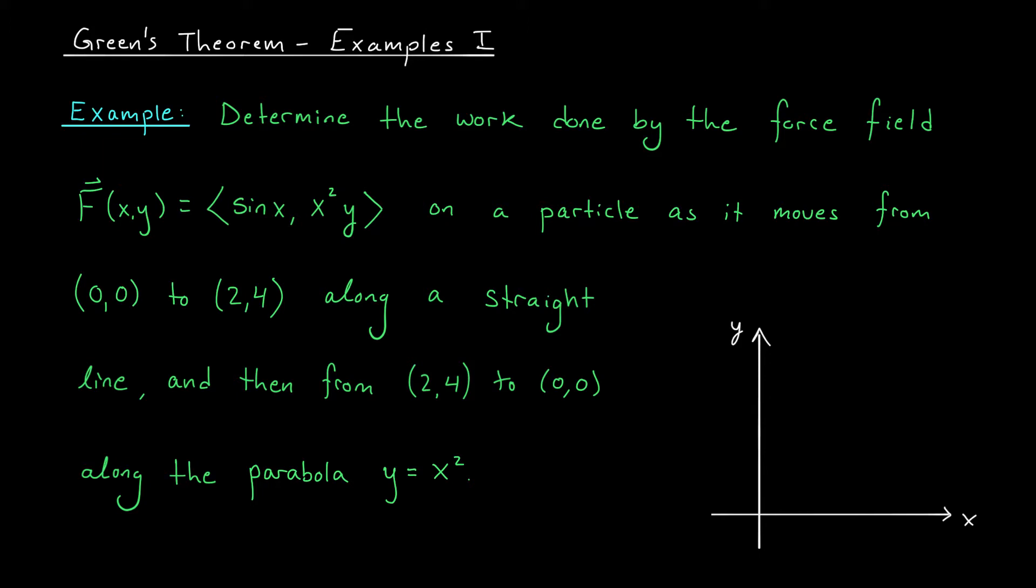There are lots of words in the statement of this problem, so it's helpful to draw a picture to see what's going on. We have a particle that starts at the origin, moves to the point (2,4) along a straight line, and then it takes the parabola y = x² back to the origin.